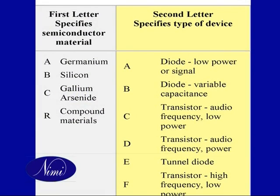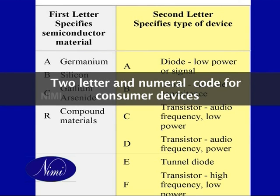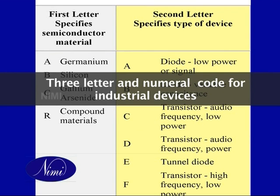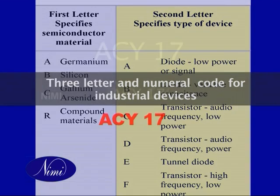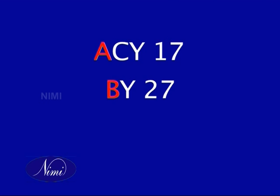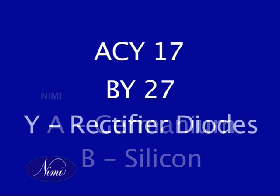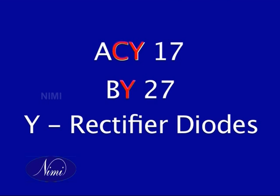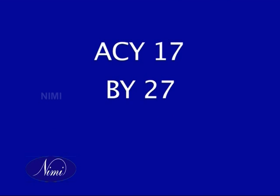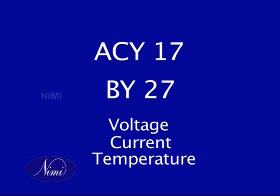Components in the pro-electron system have a two-letter and numeral code for consumer devices, for example BY27, and a three-letter and numeral code for industrial devices, for example ACY17. The first letter in the pro-electron type code indicates the type of semiconductor material used in making the device. The second and third letters indicate the applications of the component. The numeral after the second or third letter is the code number for its detailed voltage, current, and temperature specifications.